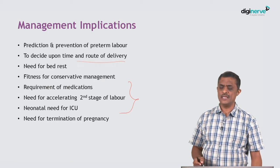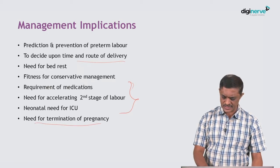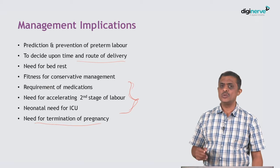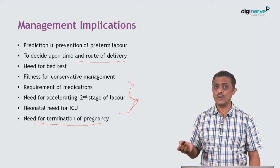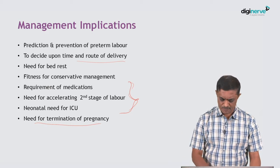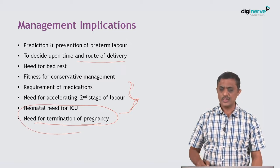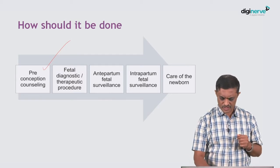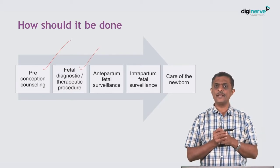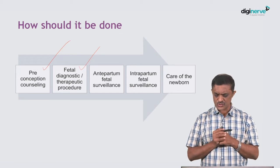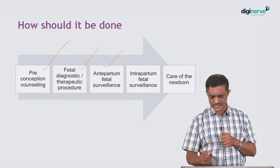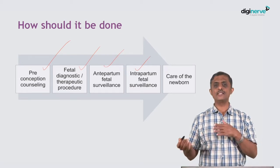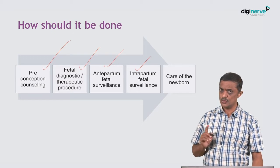The last three — probably the last one aside — the rest three would be more important when we talk about well-being assessment, but termination could be decided in the first and second trimester. How is it done? Preconception counselling is the first thing, fetal diagnostic or therapeutic procedures in the earlier part of pregnancy, antepartum fetal surveillance, intrapartum surveillance, and once the baby is born, taking care of the newborn and sending the mother home with a live baby.